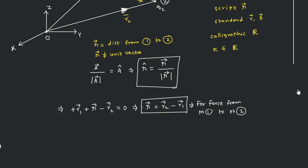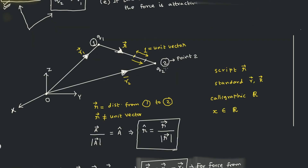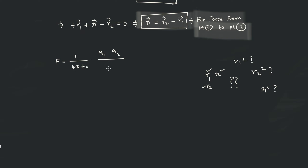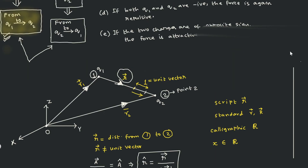The calculation done is valid only for this configuration — that is, for the force from point 1 to point 2. Now we can write Coulomb's law. The distance between q1 and q2 is given by script r, and therefore script r squared is correct in the denominator. The other options are wrong.